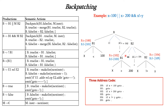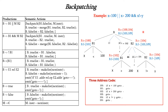Moving up, B1 AND M B2 is reduced to B2 for the AND operation. B.truelist = B2.truelist = {104}. B.falselist = merge(B1.falselist, B2.falselist) = merge({103}, {105}) = {103, 105}. Moving further up, B1 OR M B2 is reduced to B. B.truelist = merge(B1.truelist, B2.truelist) = merge({100}, {104}) = {100, 104}. B.falselist = B2.falselist = {103, 105}.